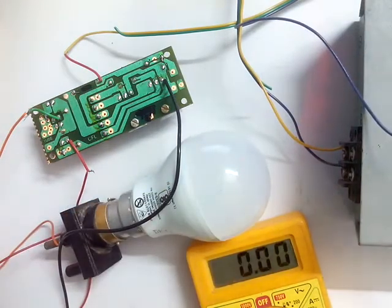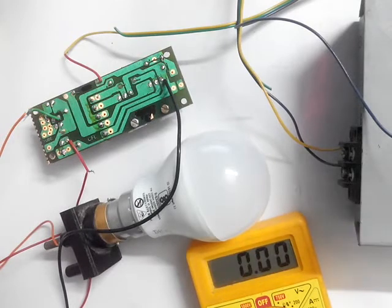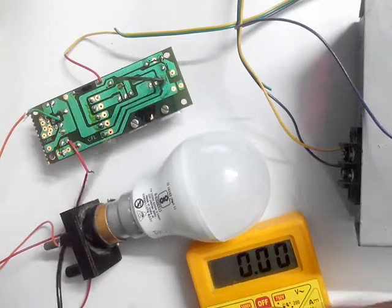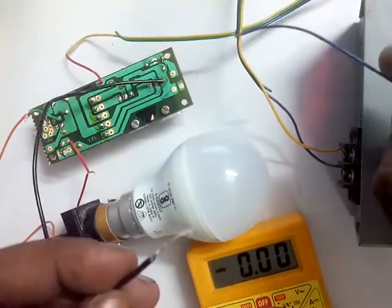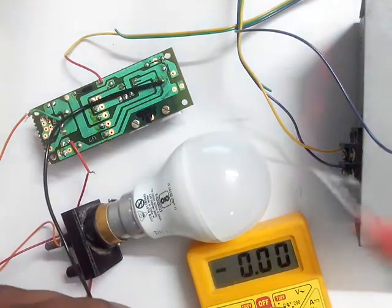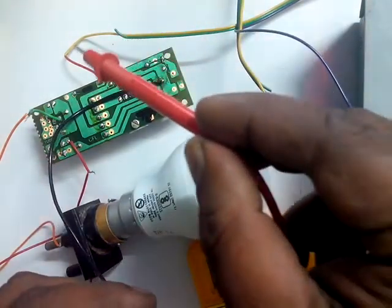Now we will connect this 13 volt DC into this inverter circuit and we will see whether the LED lamp glows. I have already connected the positive of the supply in the circuit.